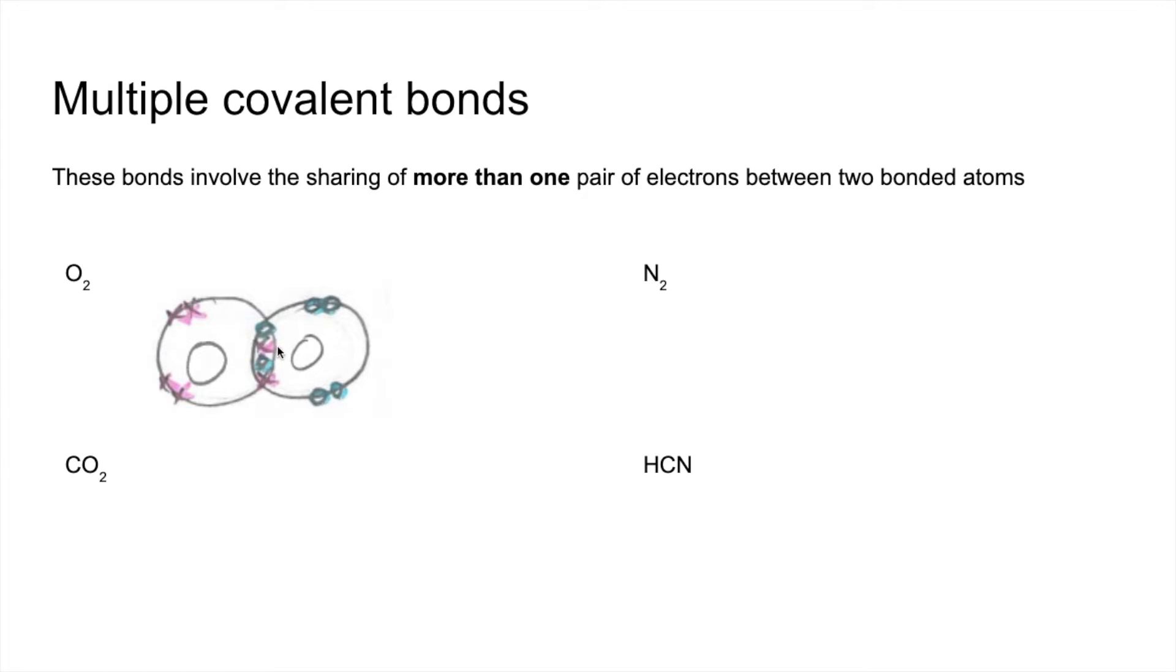In other words, to have eight electrons in the outer shell of each atom, we've got to put two electrons each into the overlap, the shared part. So each atom is sharing two electrons, hence that's a double covalent bond.